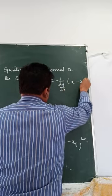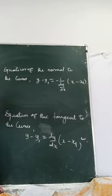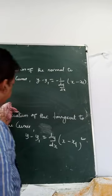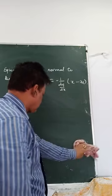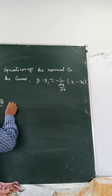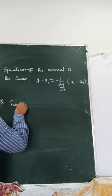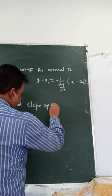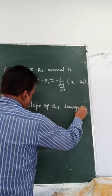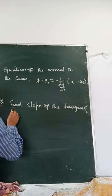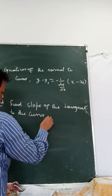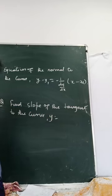Question: Find the slope of the tangent to the curve y equals 3x to the power 4 minus 4x, at x equals 4.